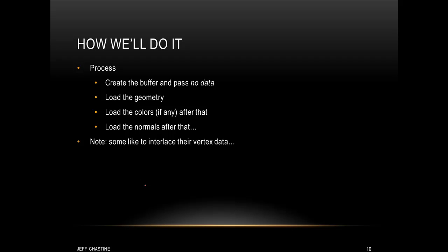The second approach to loading data onto the GPU is actually how we'll do it in this class. The basic process is to create a buffer and pass no data at that time, and right after that we're going to load the information in chunks. So for example, we might load the positions of the vertices first, followed by any color information we might have, followed by some normals and texture coordinates and so on. Realize that it's possible to interlace the vertex data such that all information about one vertex is located together, but that's not what we're going to do here.